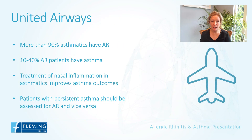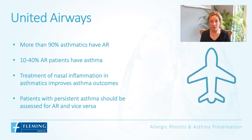There is a new united airways disease approach for asthma and allergic rhinitis. The idea is that we breathe through our nose all the way down into the base of our lungs, so if we're going to manage airway disease we should manage the full airway. More than 80 to 90 percent of asthmatics have allergic rhinitis, and up to 40 percent of allergic rhinitis patients have asthma. Treatment of nasal inflammation in asthmatics has been shown to improve asthma outcomes, so patients with persistent asthma should be assessed for allergic rhinitis and vice versa.